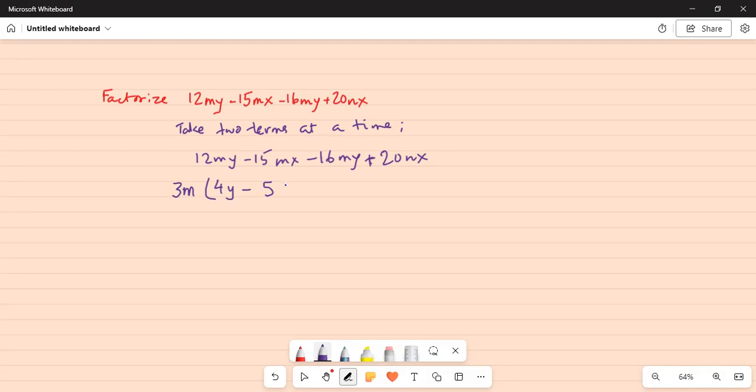Now my goal will be to get 4y minus 5x as a common factor from the next two. And the only way I can do is, my mistake, pardon me.